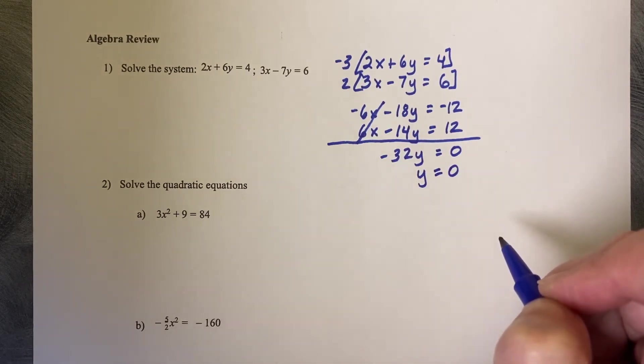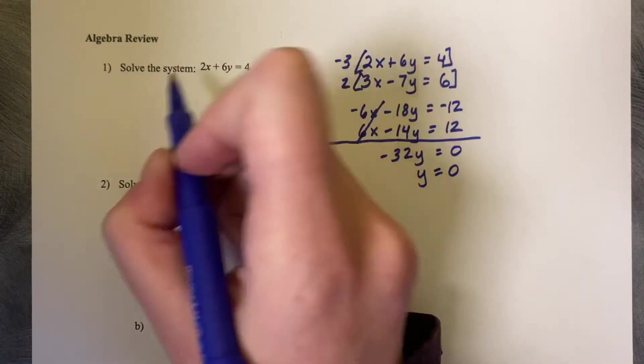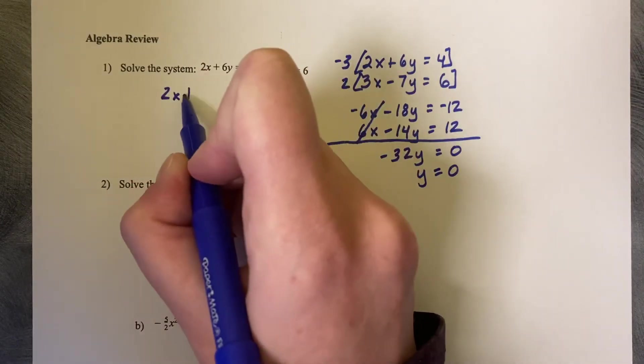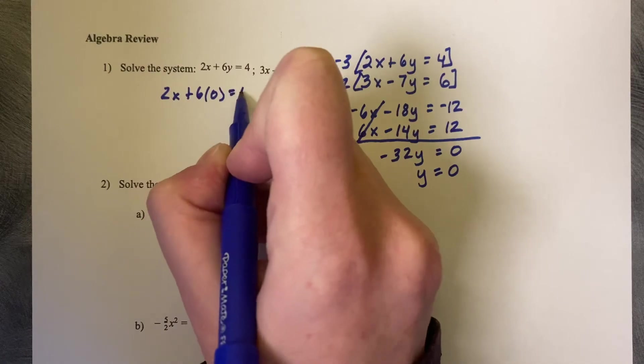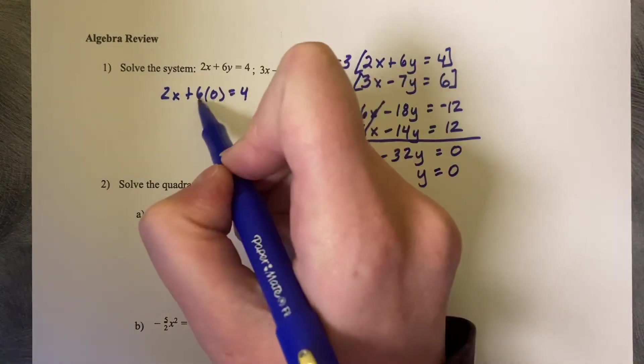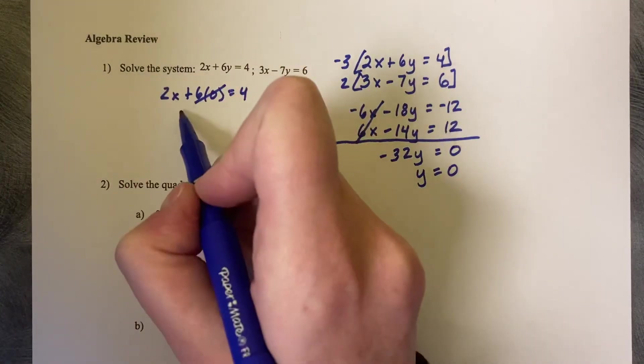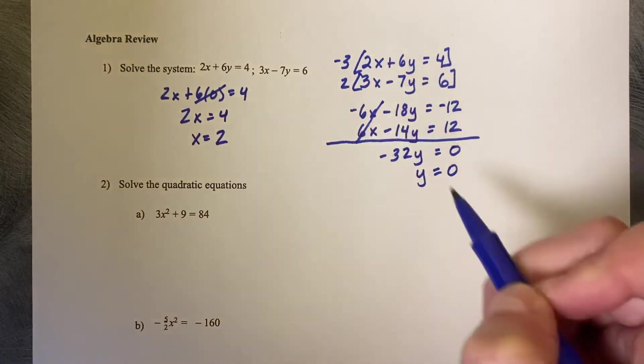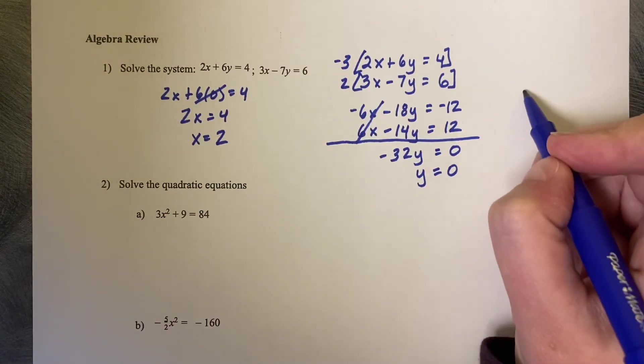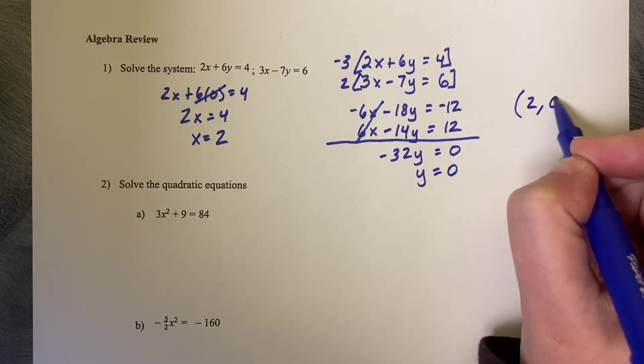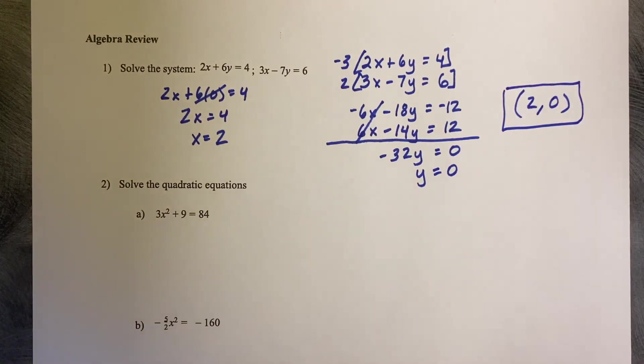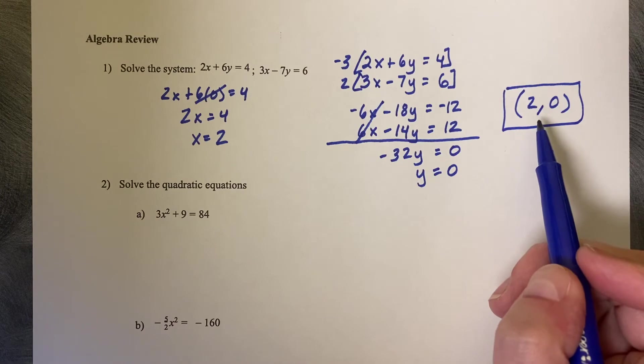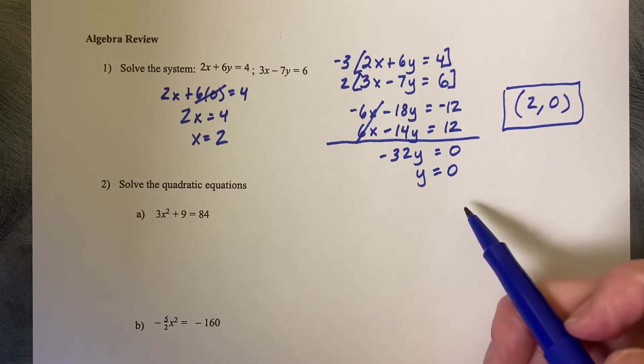Divide by negative 32, and y equals 0. And now I choose any friendly equation to plug 0 in for y. So 2 times x plus 6 times 0 equals 4. 6 times 0 cancels, and we're left with 2x equals 4. Divide by 2, and x equals 2. So our solution here as an ordered pair is 2 comma 0. Recall that you write it as an ordered pair because these are two lines that intersect each other at one location. These two lines intersect at 2 comma 0.